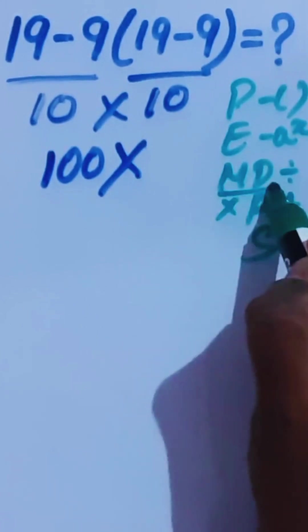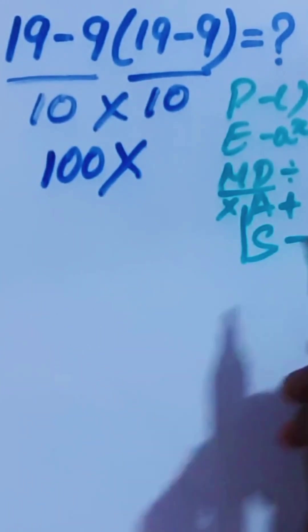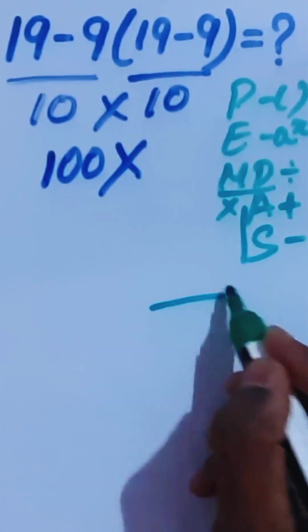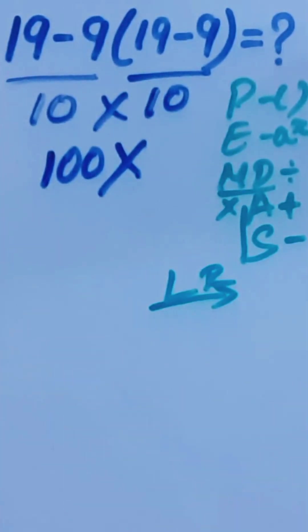Now, multiplication and division are equal priority, addition and subtraction are equal priority. We have to follow the left to right rule in the problem. Now, we're going to do this problem the correct way by using this order of operations PEMDAS.